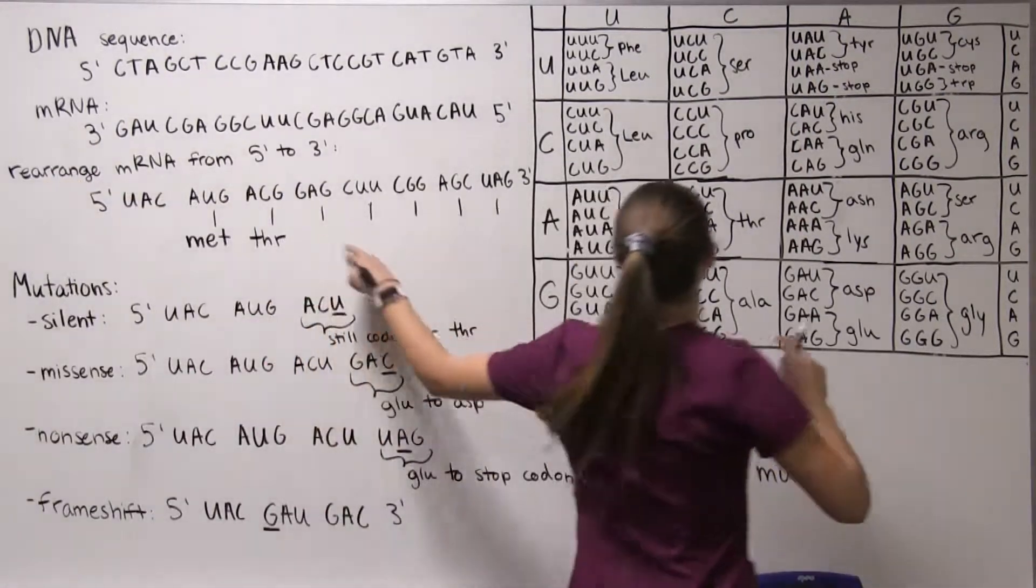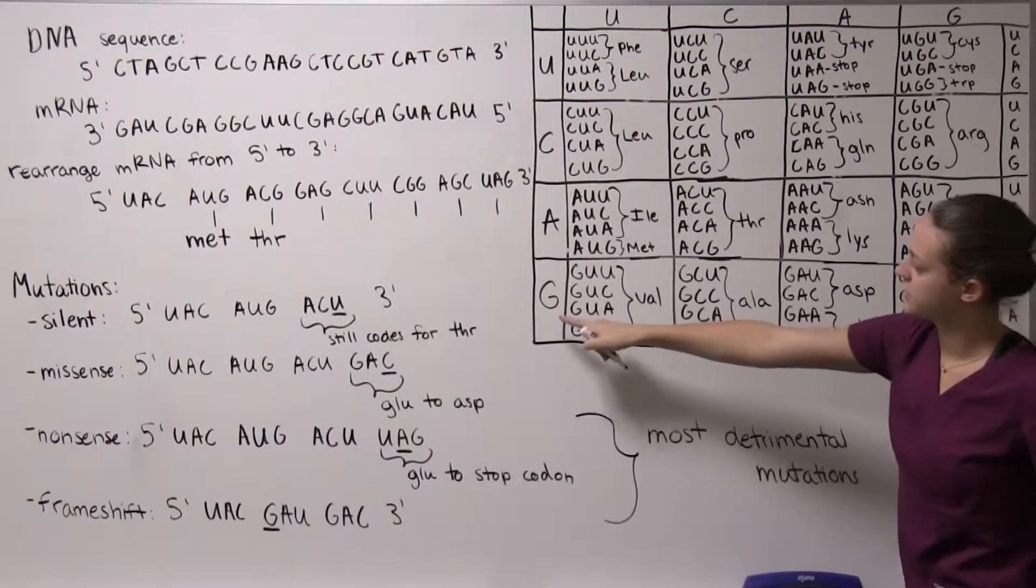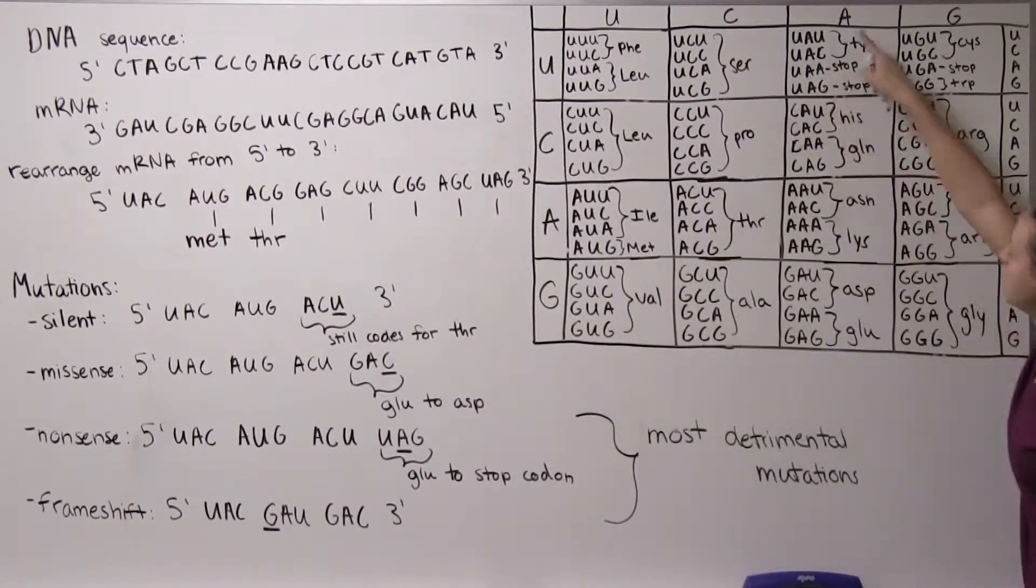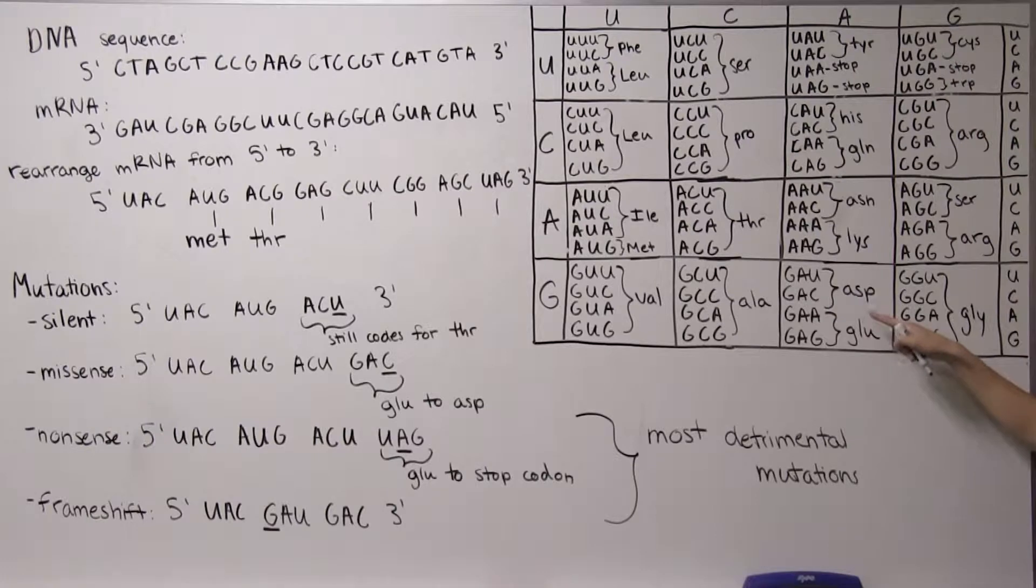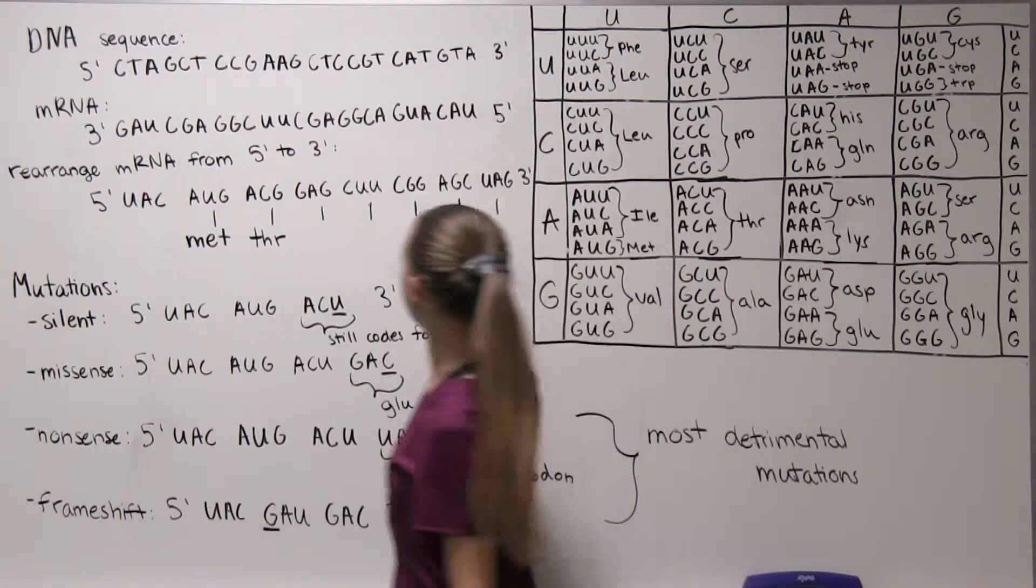Moving on we have G so start here G then we go down here and then we have G again as our third letter and so we have glutamate as our peptide.